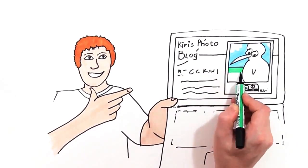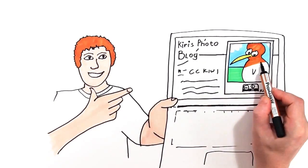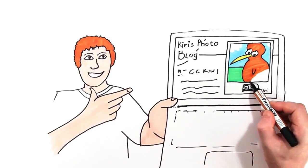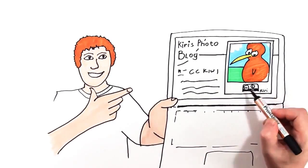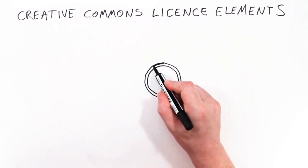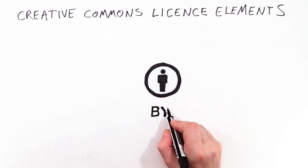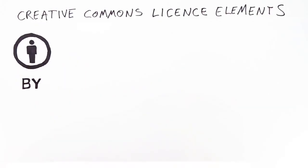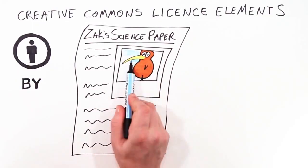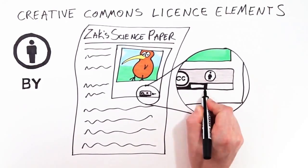Kiri's license is legally robust but easy for Zach to understand. She's told the world, including Zach, that they can use CC Kiwi as long as they acknowledge her as the original photographer. There are more rules Kiri could have included. Creative Commons licenses are made up of license elements — you can think of them as rules, and each have their own special symbol. This is attribution. It means that Zach must acknowledge Kiri when he publishes his science project containing her photo.